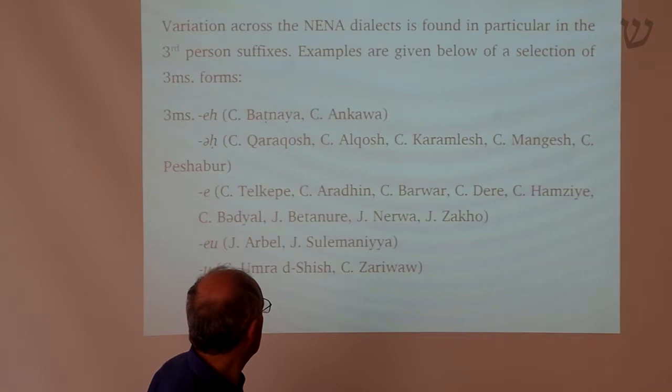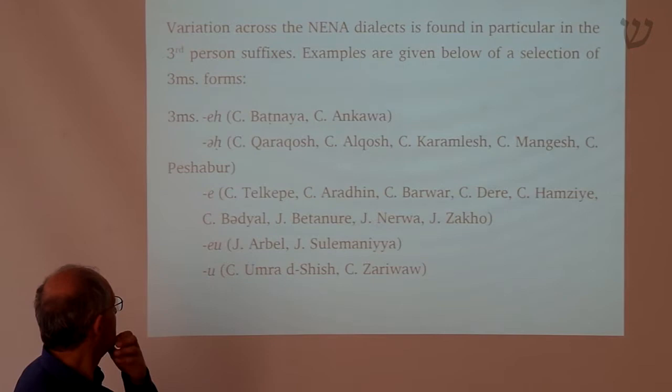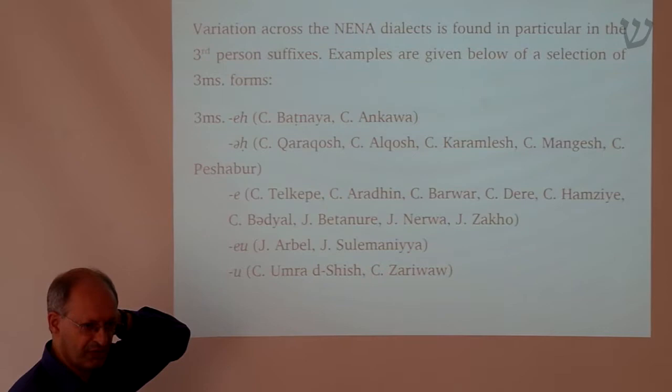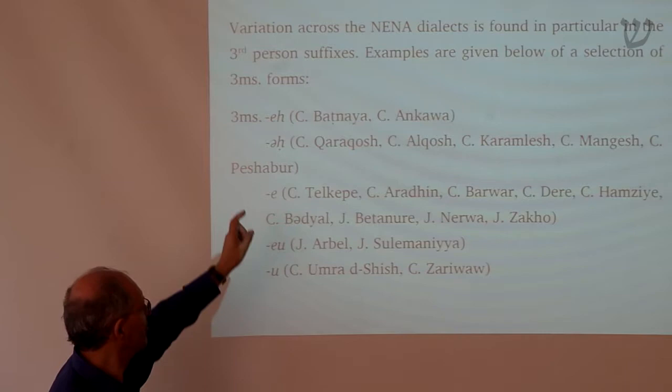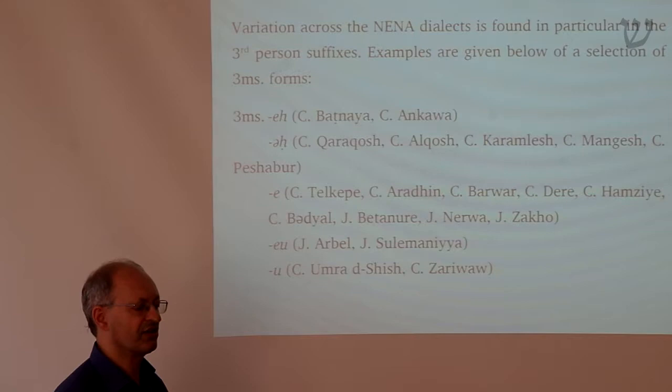There's a lot of variation in the third person suffixes. Some very conservative dialects, like Botnaya or Ankawa, still have the form 'eh' in the third masculine singular — this is the historical form you get in earlier dialects of Aramaic going all the way back to Biblical Aramaic, still preserved in some dialects on the Mosul plain. Some dialects of the Mosul plain have the interesting feature of turning this laryngal 'eh' to a pharyngeal — a kind of strategy to preserve the H.